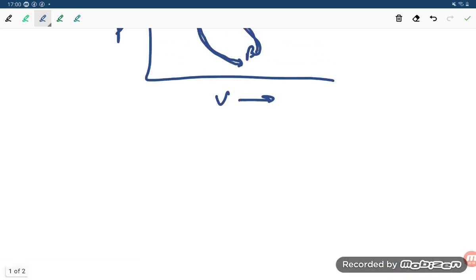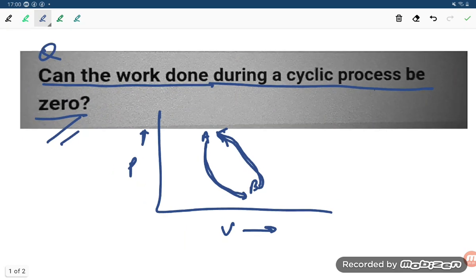Retracing the same P-V diagram, so similar condition is there, student, then the work done can be zero. Otherwise it cannot be zero also.